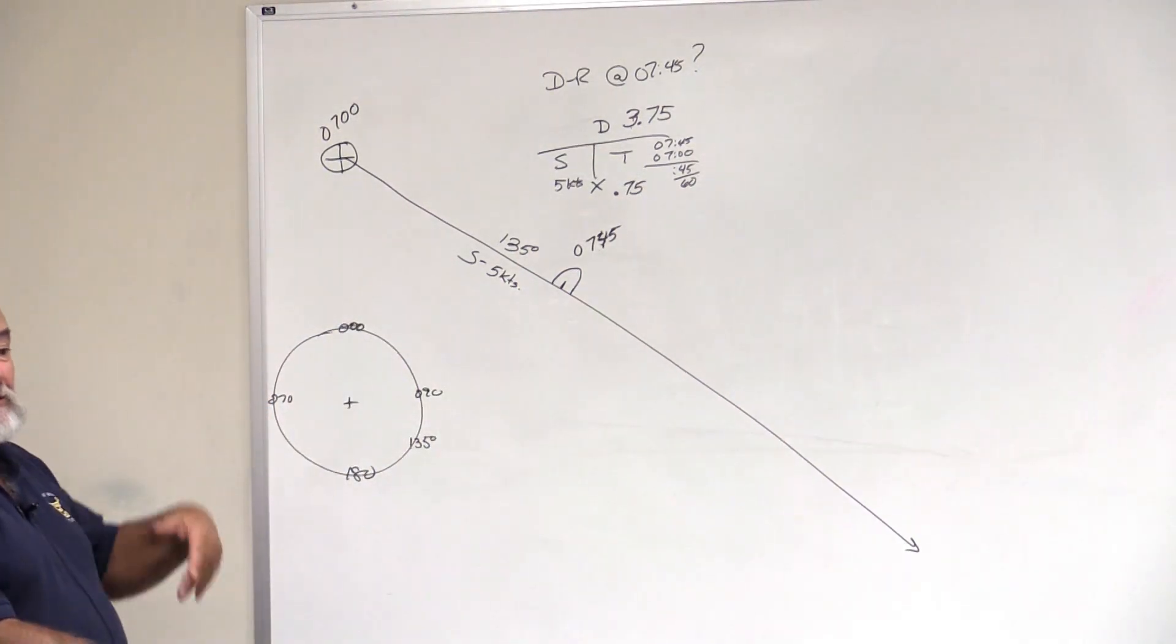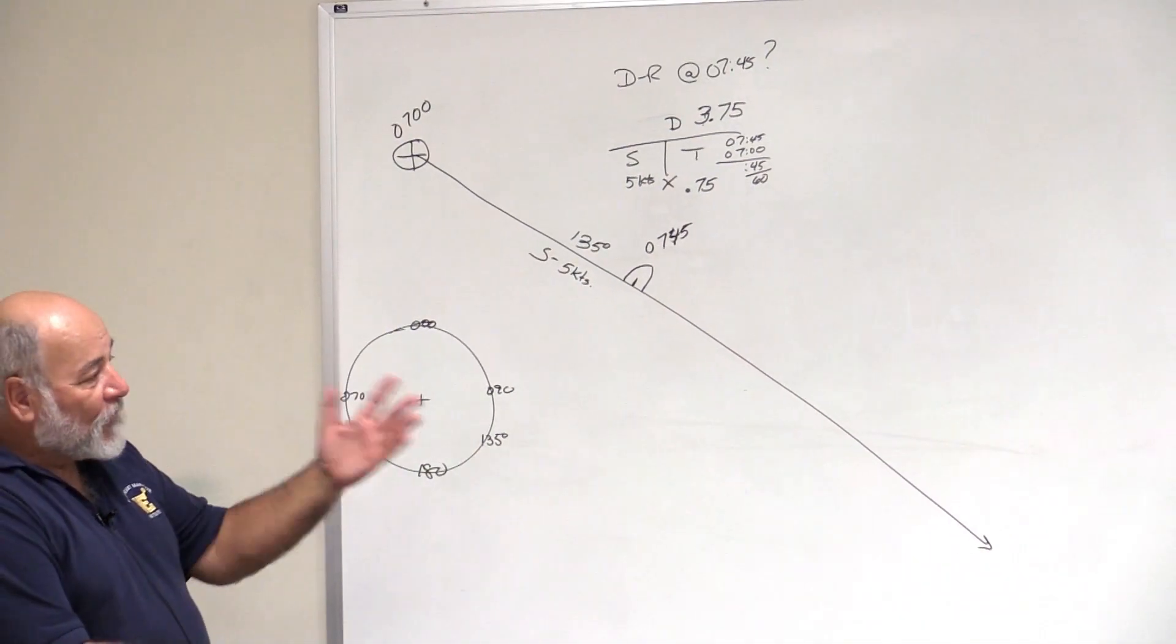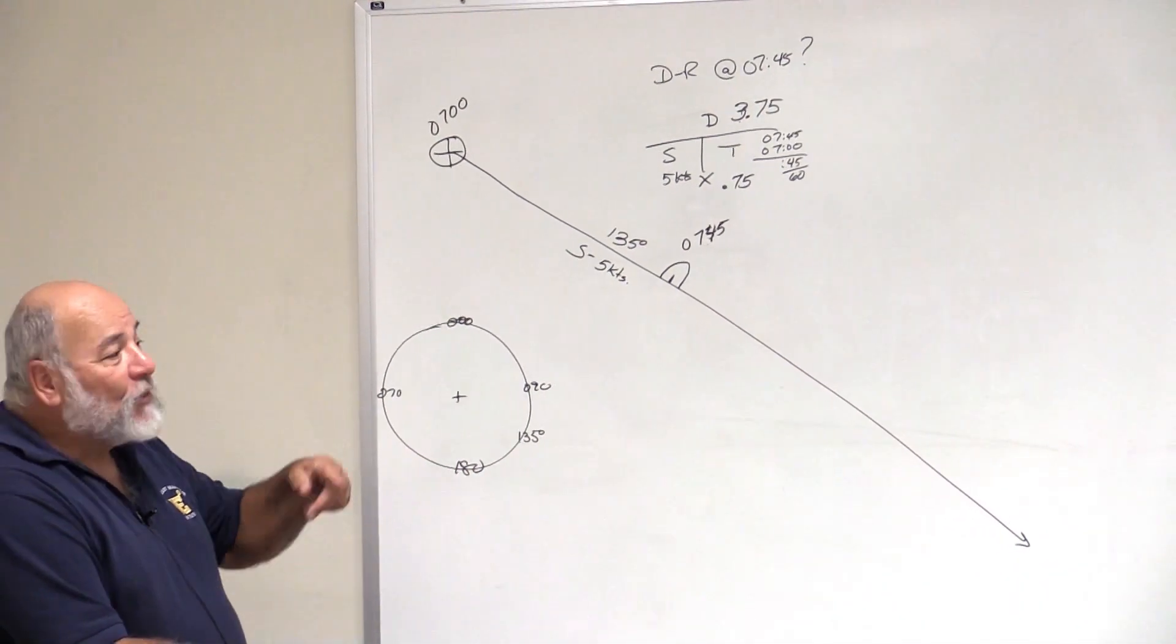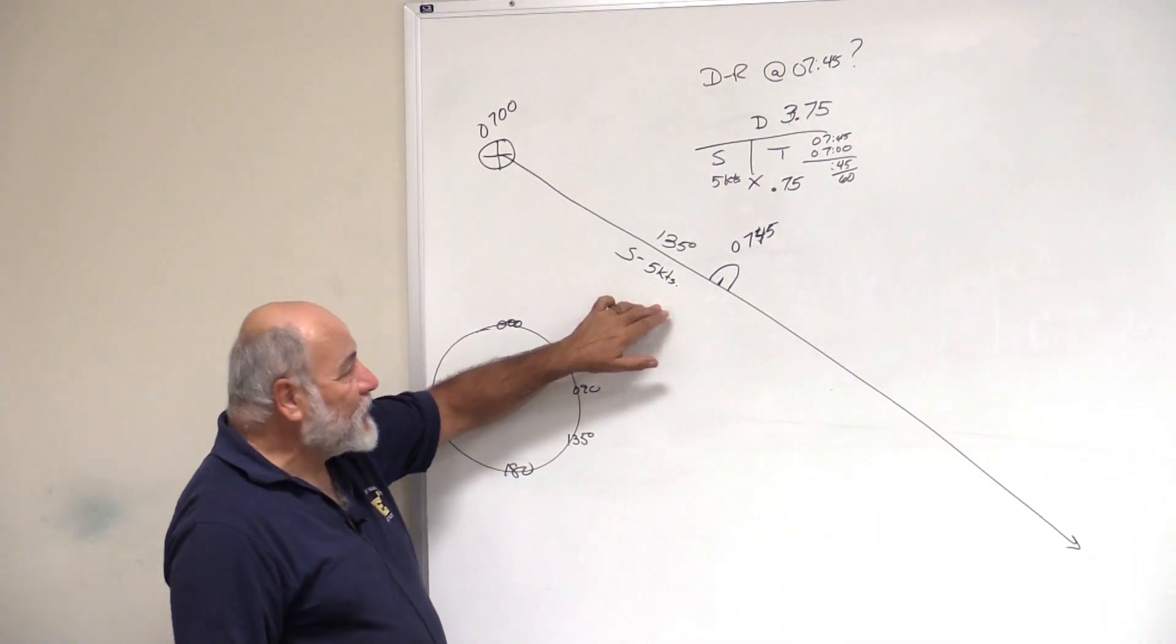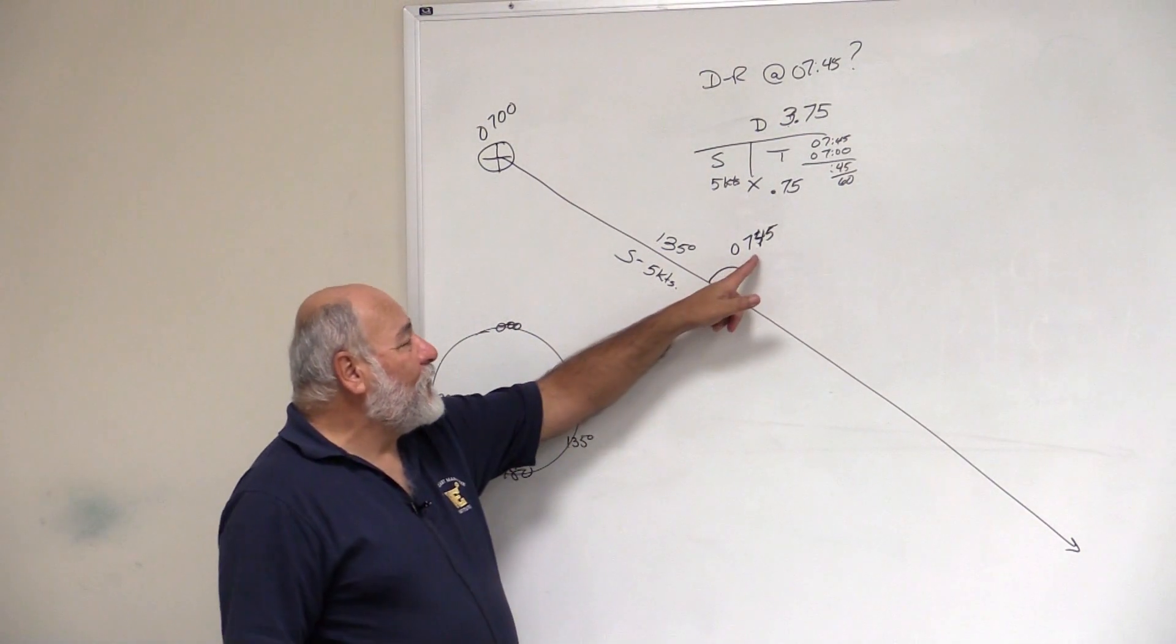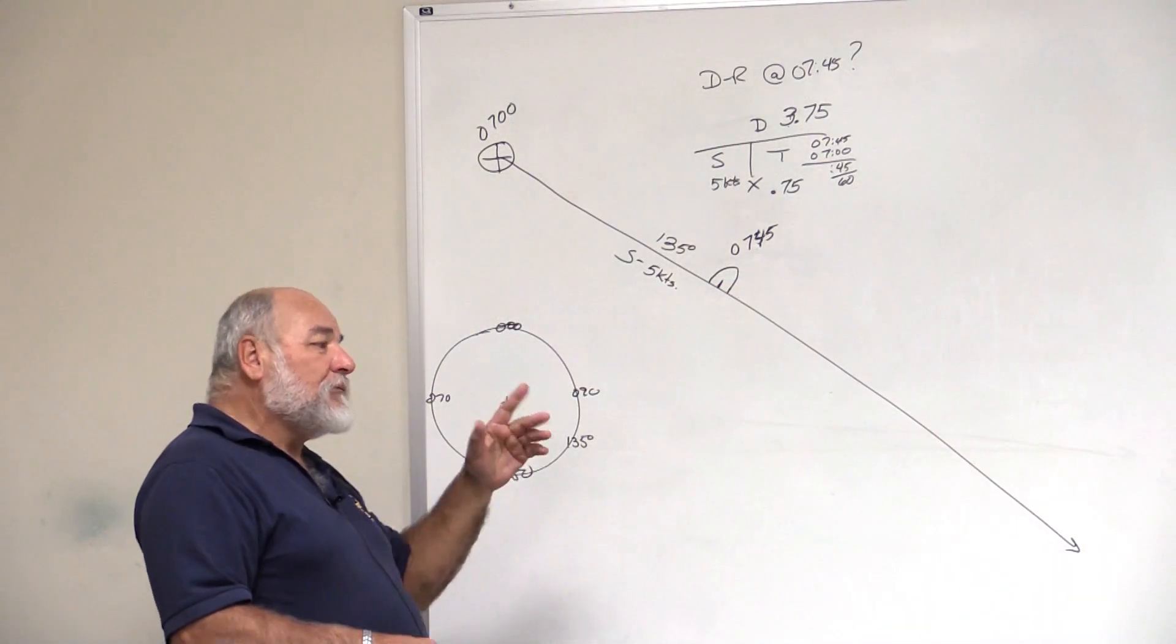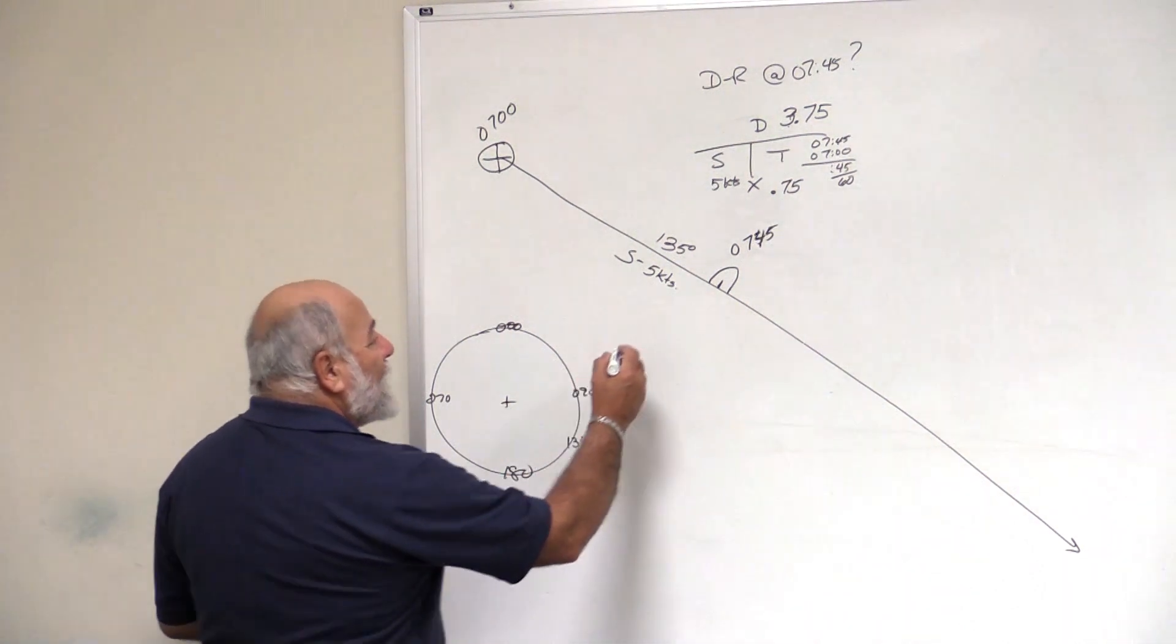You fixed your position with latitude and longitude, cross bearings, GPS, radar ranges. But somehow you fixed your position. When you do the examples in the book, they're going to give you a new position. They're going to tell you that at 7:45 you reckoned you were here, you thought you were here, but you pushed your GPS and you find out that you were really right here.